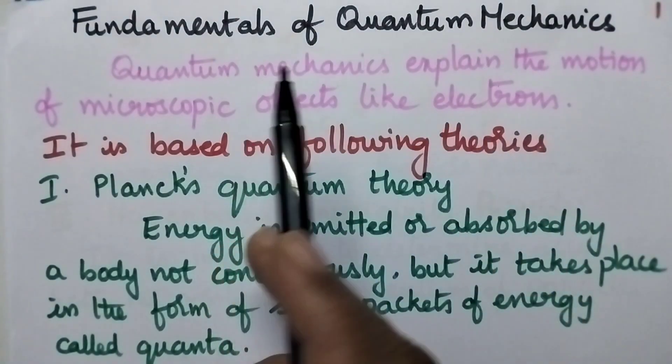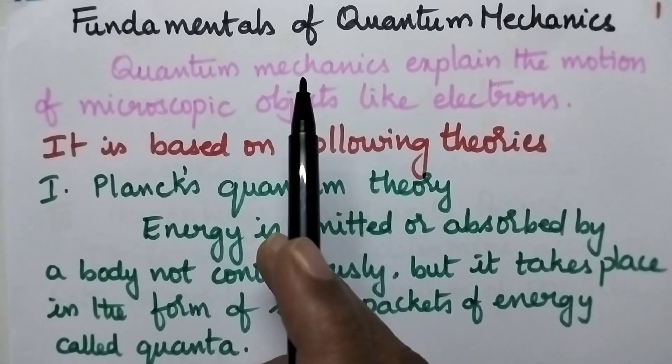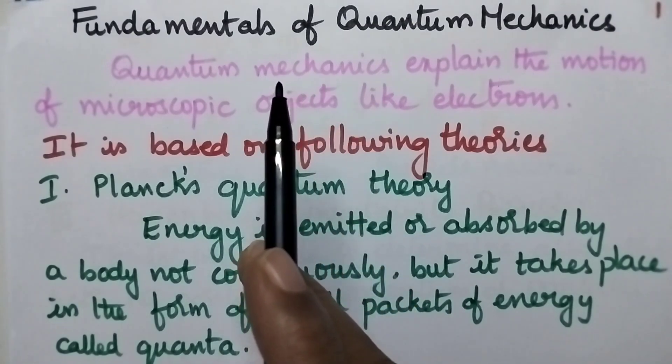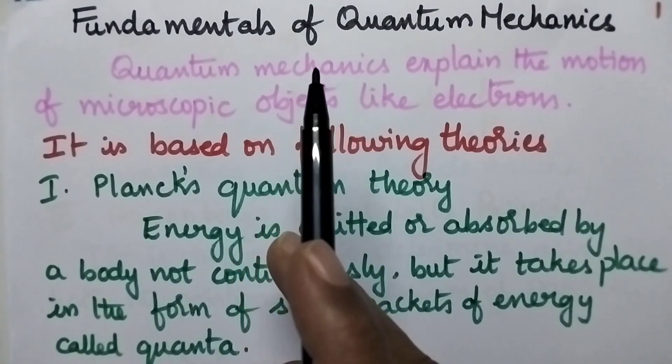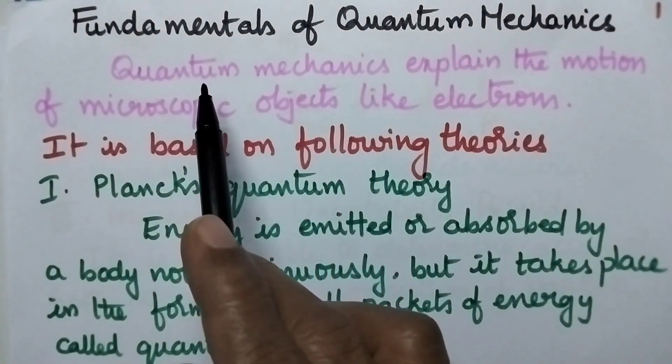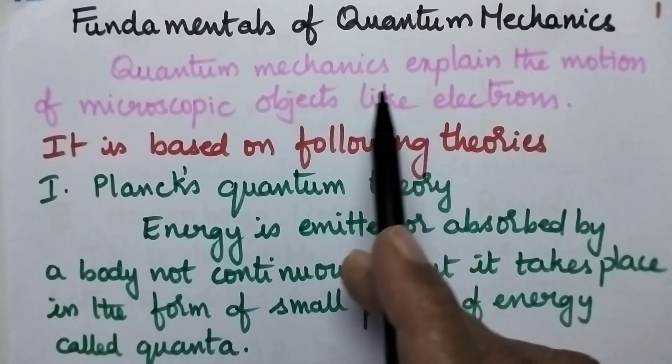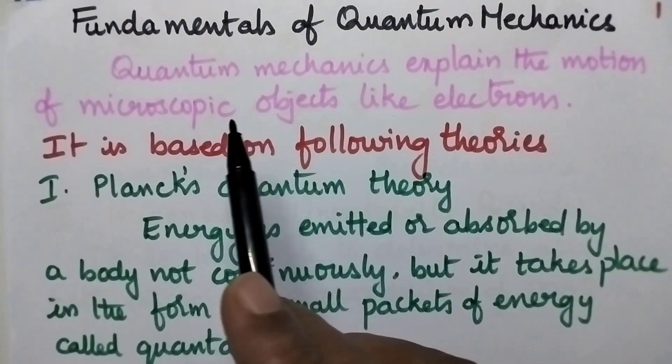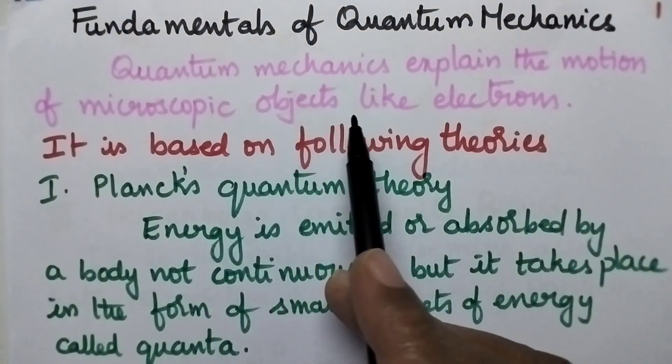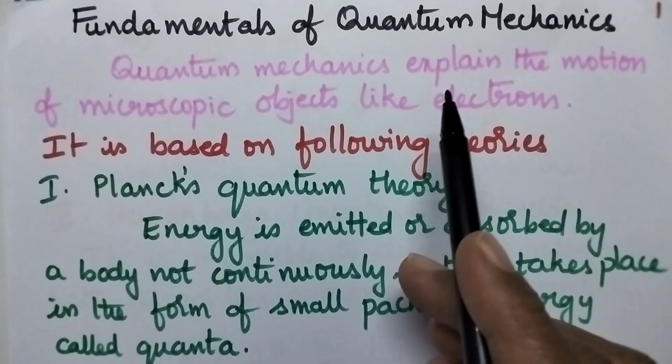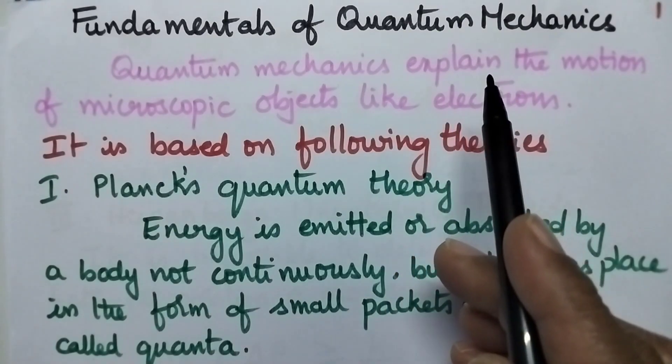Classical mechanics explains the behavior of macroscopic particles like stones and planets, whereas quantum mechanics explains the behavior or motion of microscopic objects like electrons, protons, atoms, molecules, etc.